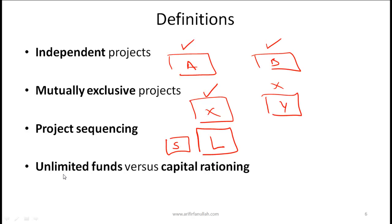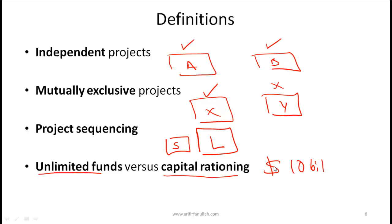In capital budgeting there can, very infrequently, be a situation of unlimited funds, meaning a company has enough funds to do whatever positive NPV projects it can find. The more common and realistic scenario is capital rationing, where there is a set budget — say a 10 billion dollar budget for a large company — and the company must figure out which projects to do and which not to do within that budget. That exercise is called capital rationing.